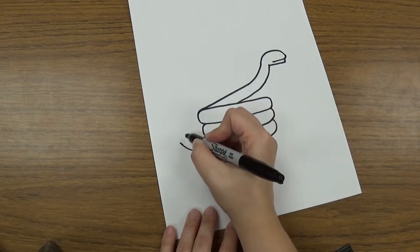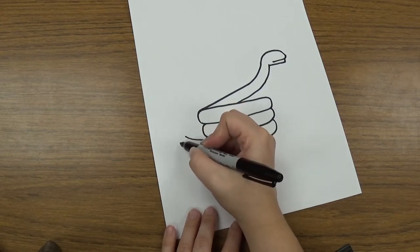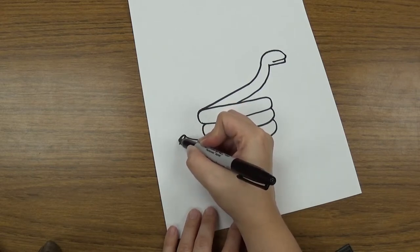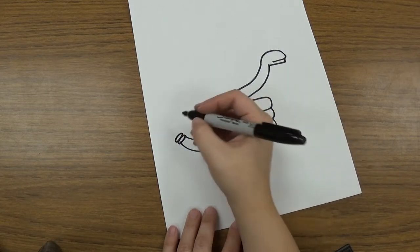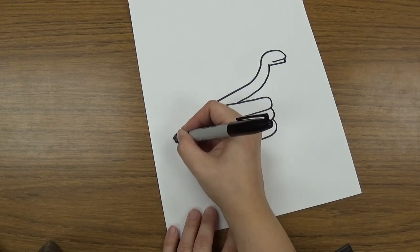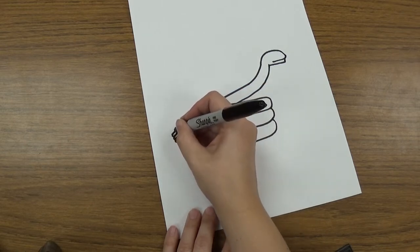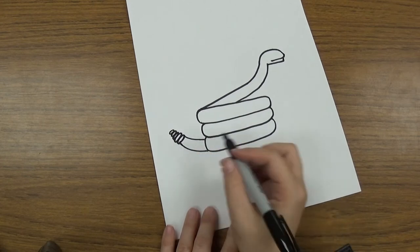And then we're gonna use ovals to make that rattle on the end of his tail. So we're gonna use hot dog shaped ovals again, just like that. And we're gonna make a bunch of them touching each other. And they get smaller and smaller. As you add more and more they get smaller and smaller and smaller. And that's the rattle.